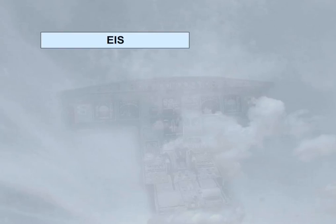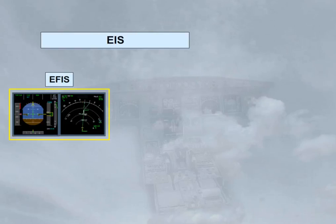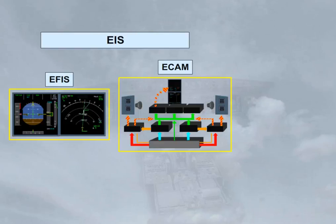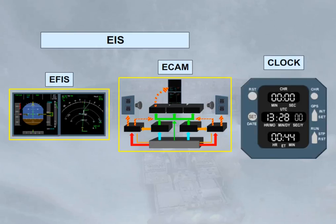In this module, we introduced you to the Electronic Instrument System with its two subsections, the EFIS and the ECAM, and to the clock. In the next modules, we will concentrate mainly on the ECAM system, and then later on in the course, we will look at the EFIS displays in greater detail.